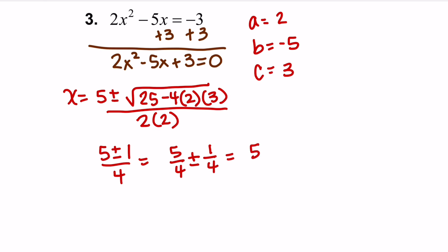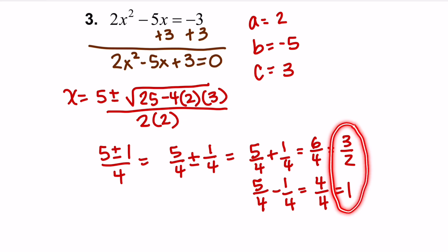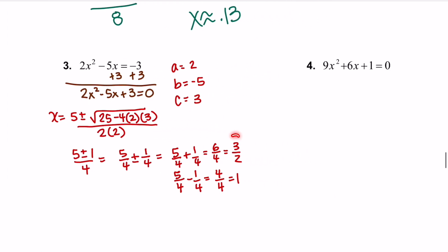5/4 plus 1/4 is 6/4, which reduces to 3/2. 5/4 minus 1/4 is 4/4, which equals 1. Since we got fractions and whole numbers, that tells me this would have factored, so we could have done it that way as well.